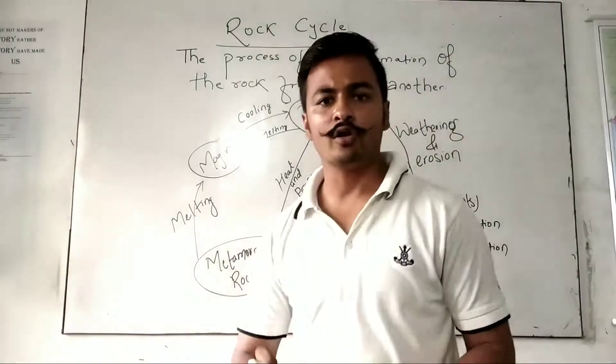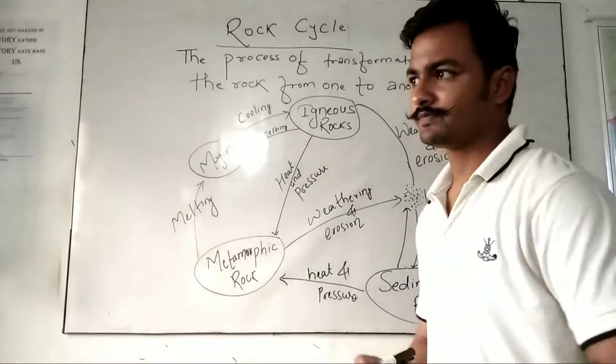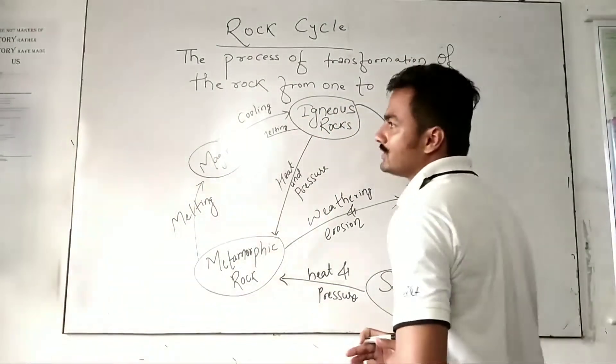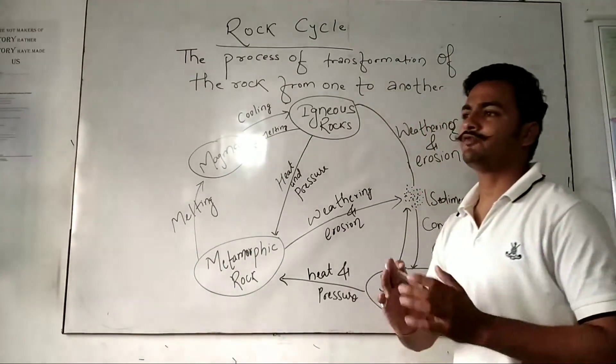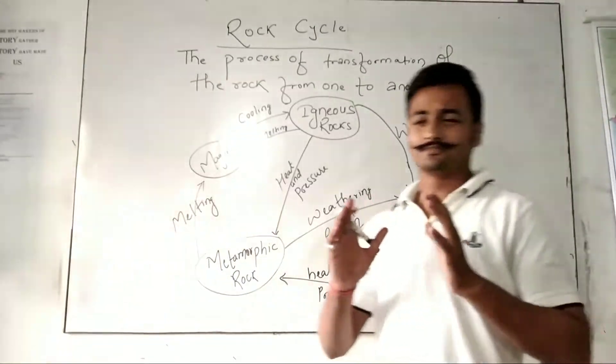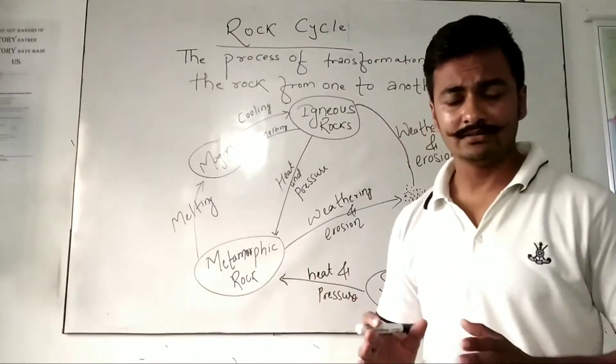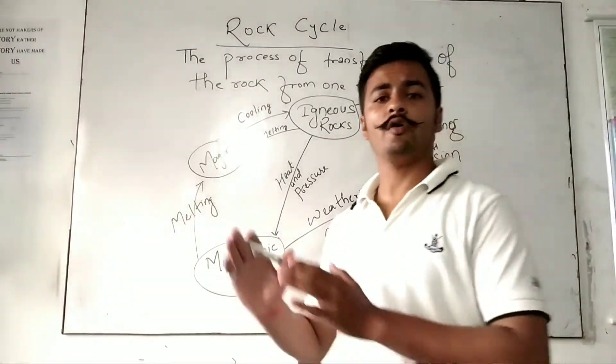Igneous rock is known as primary rock and it is formed when the molten magma or lava comes out from the volcanic eruption and cools down.